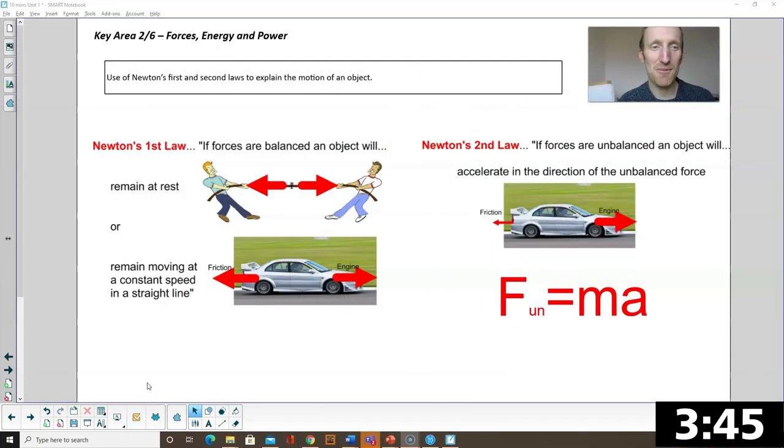Okay Newton's first and second law, recap from Nat 5. Newton's first law, balanced forces objects remain stationary or moving at a constant speed. Second law, unbalanced forces, the object's going to accelerate in the direction of the unbalanced force. F equals ma, remember for F equals ma, it's the unbalanced force that you're using in that equation.